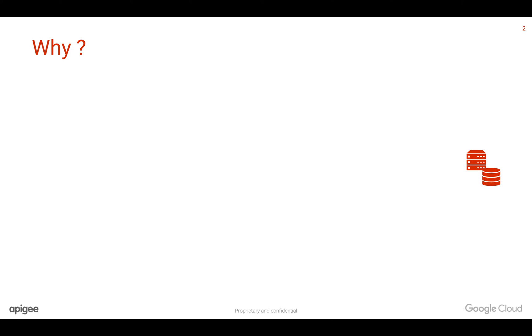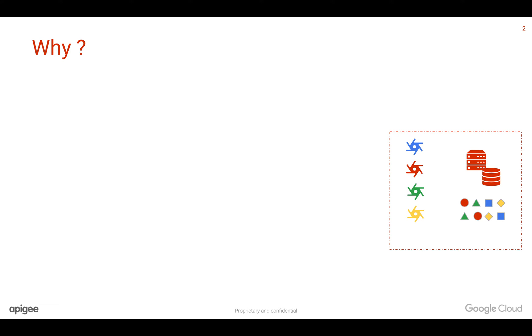Let's understand why you need API security like OAuth 2.0 when you are exposing APIs to the outside world. Let's say you have a back-end system and various datasets are stored in this back-end system in different databases. This information is exposed using various services which are nothing but APIs which do various operations like updating the data, creating the data, deleting the data. In general, most of these services are kept inside the firewalls of enterprise systems.